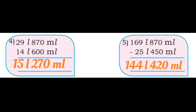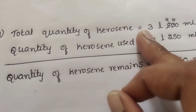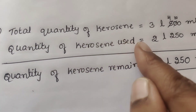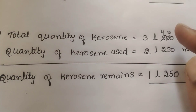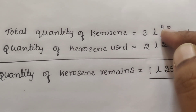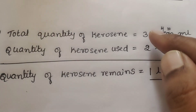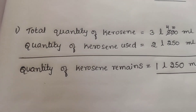In the next section we will see the working problems. First question: Sarita bought 3 liter 500 ml of kerosene. She used 2 liter 250 ml. How much quantity of kerosene remains? Total quantity of kerosene is equal to 3 liter 500 ml. Quantity of kerosene used is equal to 2 liter 250 ml. Borrow 1, so 10 minus 5 is 5, then 4 minus 2 is 2, and 3 minus 2 is 1. Answer: 1 liter 250 ml of kerosene is remaining.